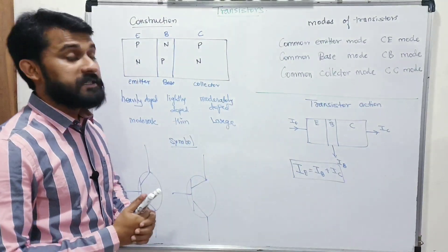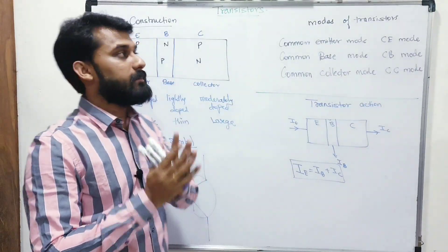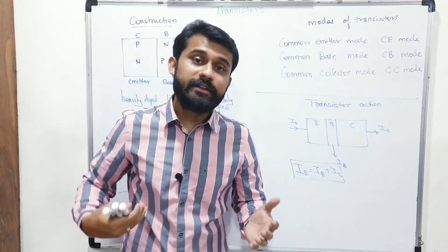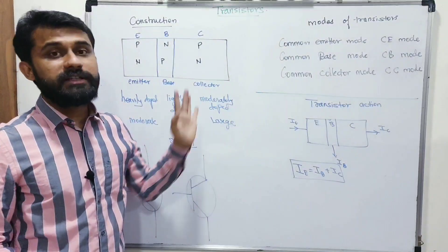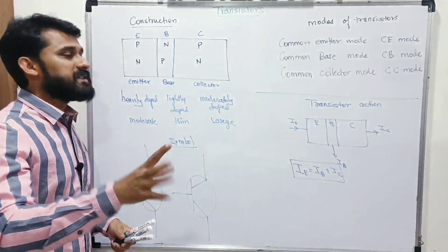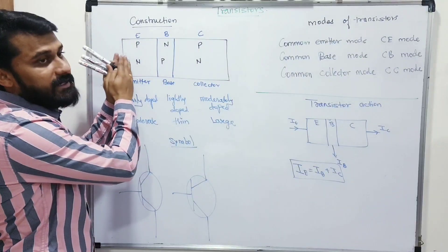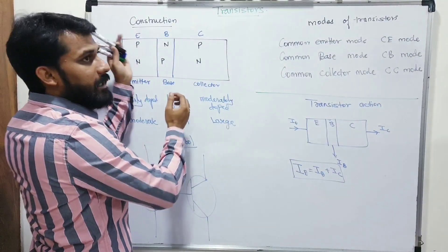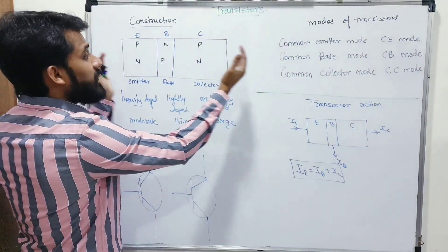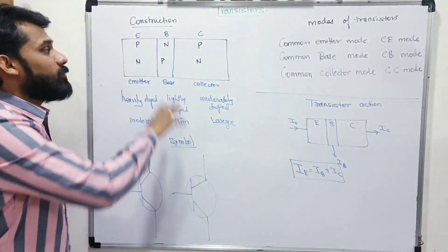We are starting with the transistors part. For CET, we need to know specific things to solve all questions. First, transistor construction: take a big semiconductor and dope it from both sides as P-type and the middle as N-type, giving PNP. Or dope both sides as N-type with P-type in the middle, giving NPN. So basically, transistors are either PNP or NPN type.